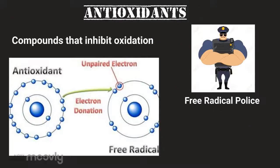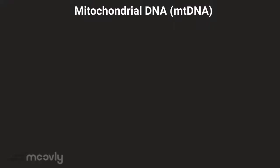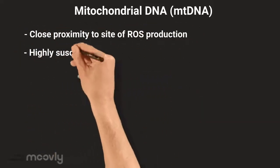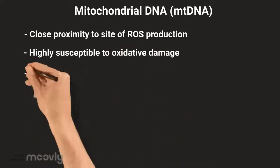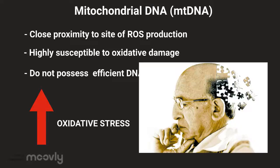Antioxidants are compounds that inhibit oxidation and therefore keep ROS levels low. They are produced to counteract oxidative stress generated by excess ROS. However, in times of environmental stress, elevated ROS levels can overwhelm endogenous cellular antioxidant mechanisms, resulting in excess ROS accumulation. Mitochondrial DNA is located in close proximity to the site of ROS production, making it highly susceptible to oxidative damage. This is amplified by the fact that mitochondria do not possess efficient DNA repair mechanisms. The resulting mitochondrial dysfunction leads to increased oxidative stress, neuronal damage, and cognitive decline.